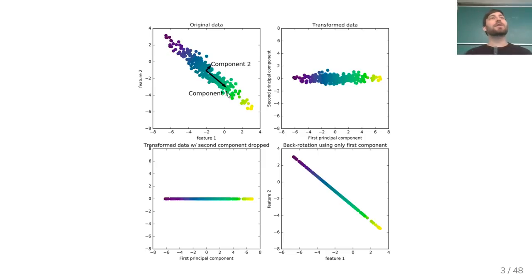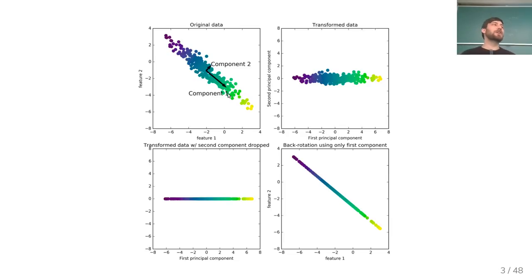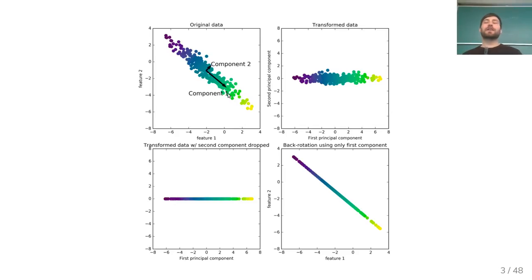Another good way to think about this is to view the data as being generated by some Gaussian distribution. In this example it is actually a synthetic Gaussian distribution. Principal component analysis tries to find the axes of this Gaussian — the first component will be the axis with the biggest variance, the second component the axis with the second biggest variance, and so on.